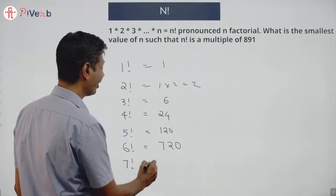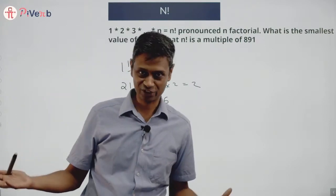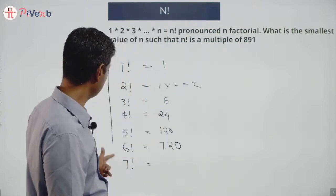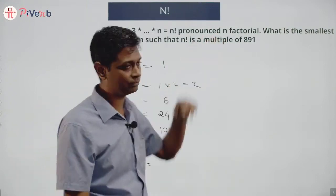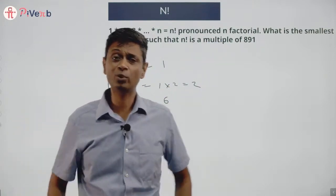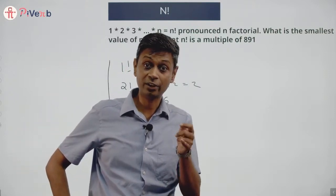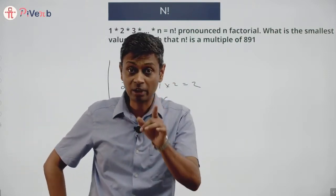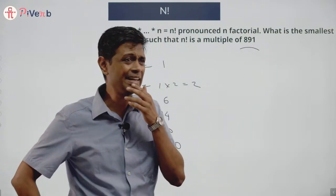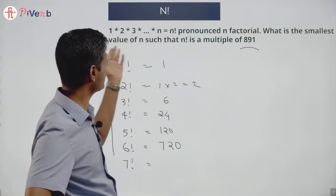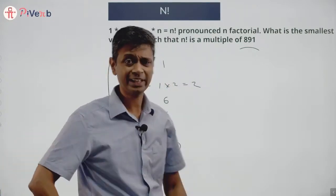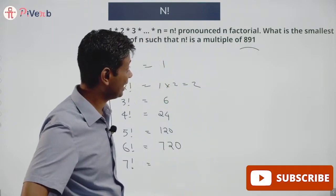6 factorial is 720, 7 factorial — the numbers are becoming larger and larger. I can't verify this way. None of these numbers is the answer; 891 is more than these. I can also say 891 factorial — 1 into 2 into 3 all the way to 891 — will definitely be a multiple of 891. So 891 works, but it may not be the smallest value of n.